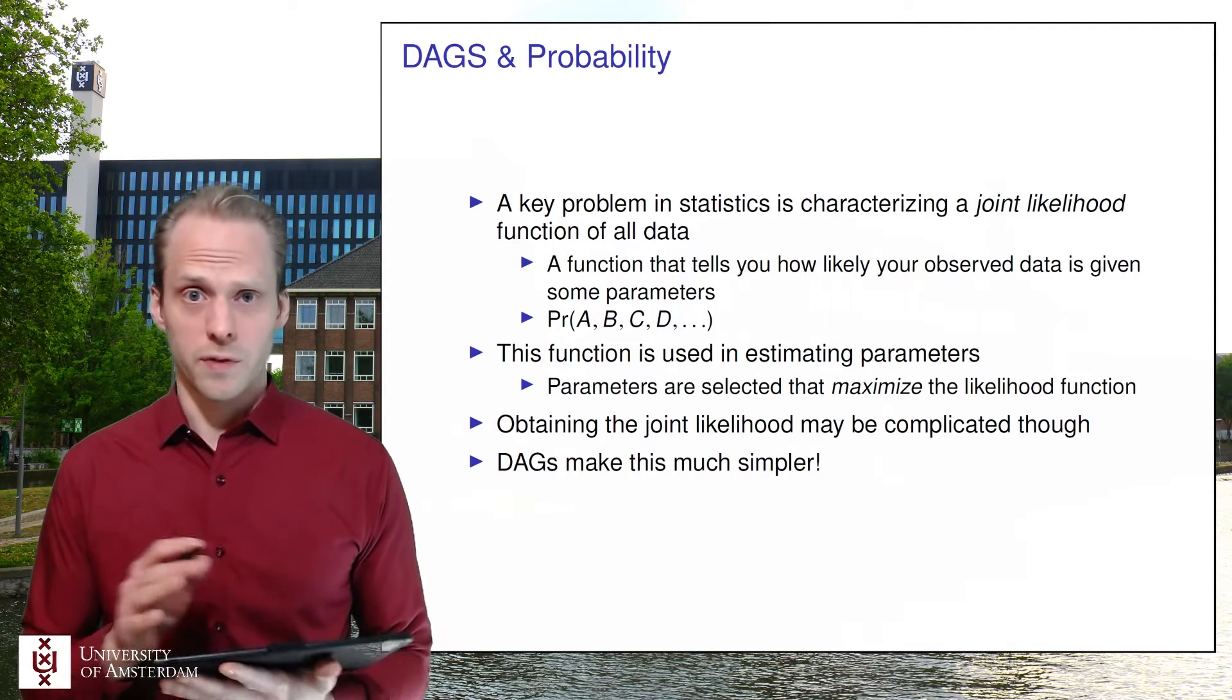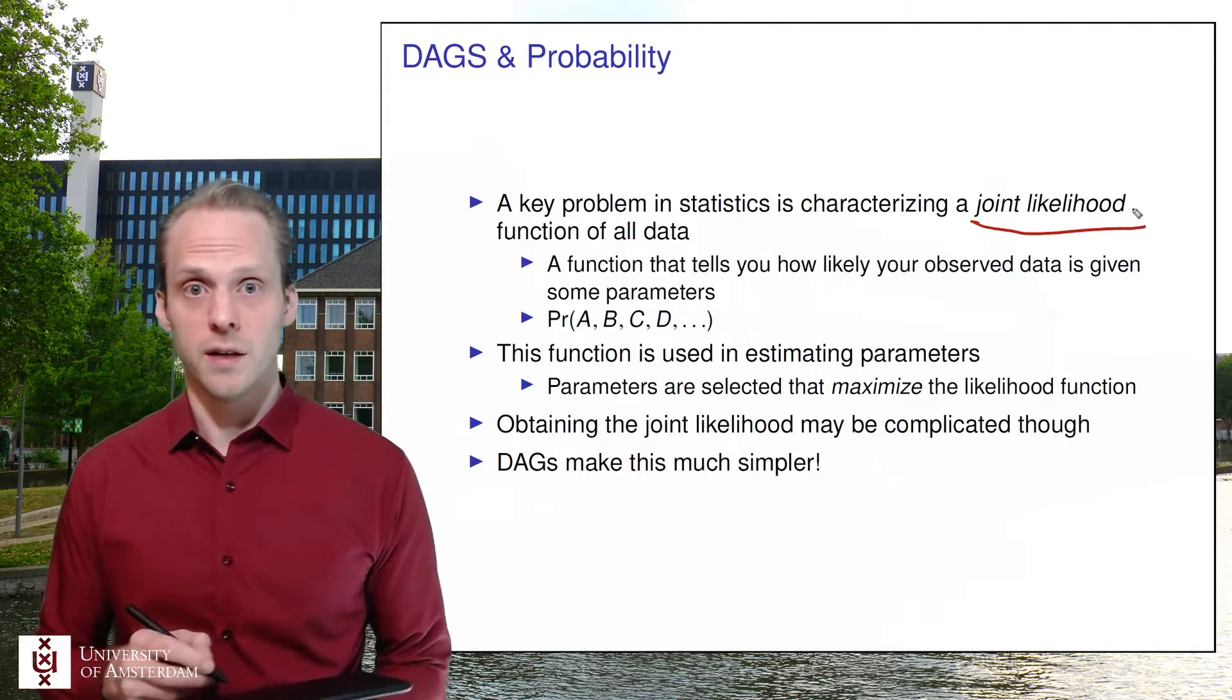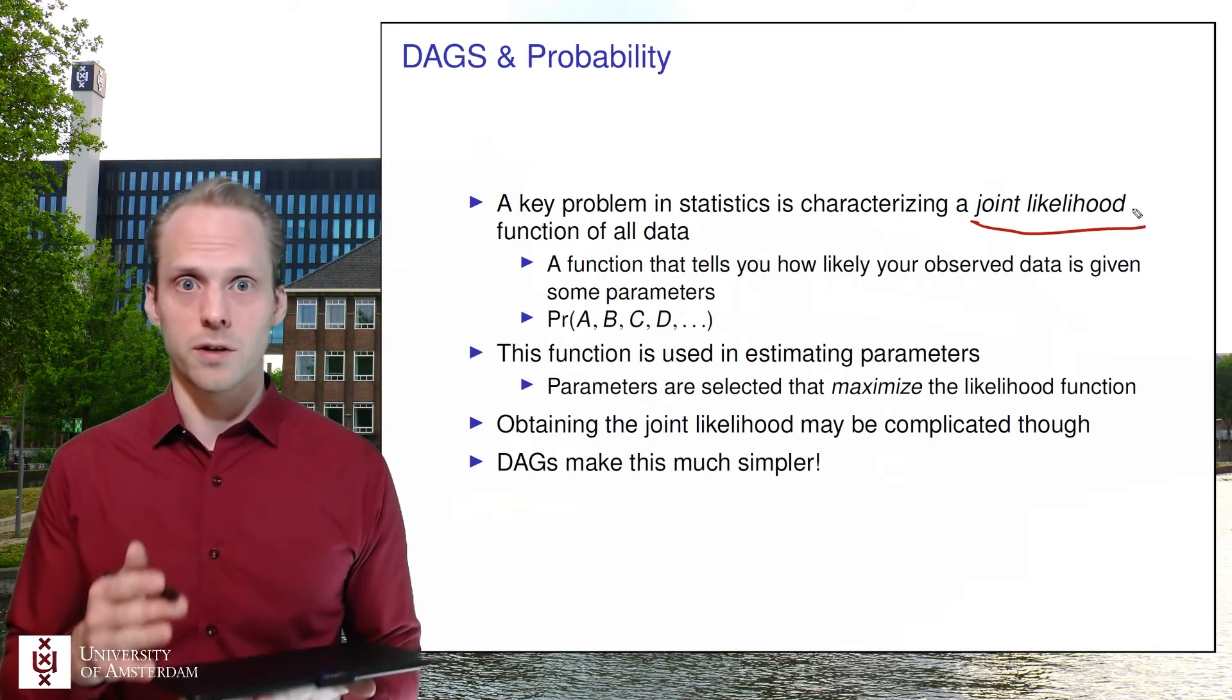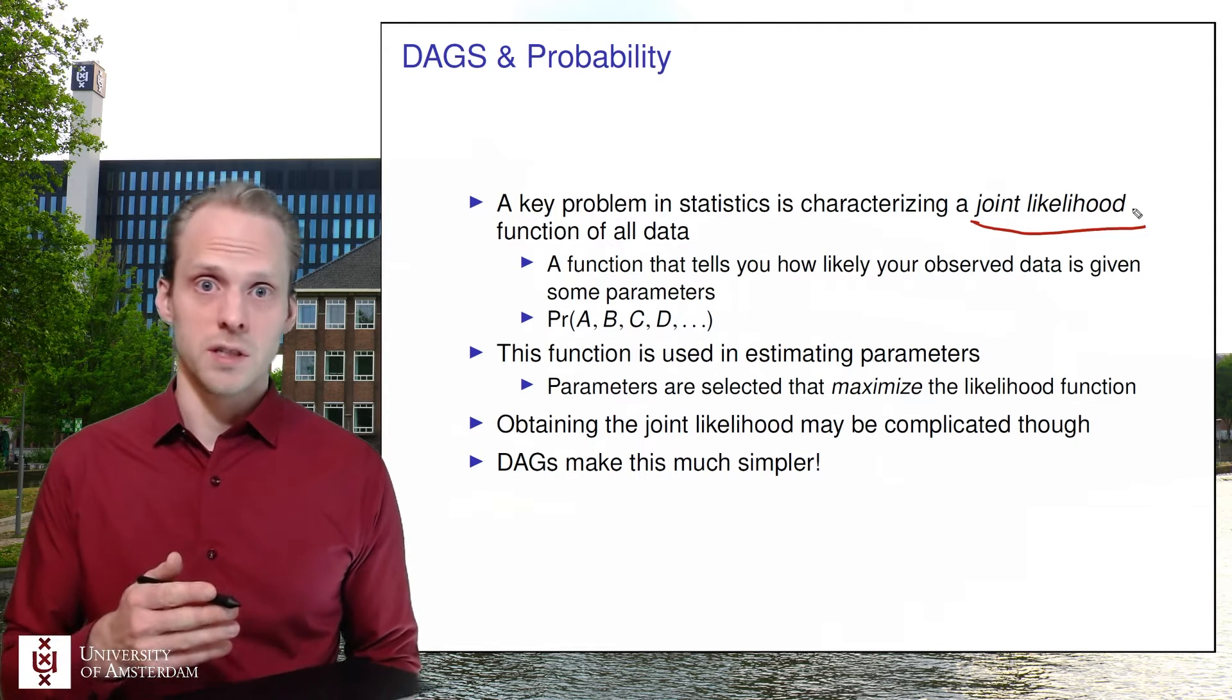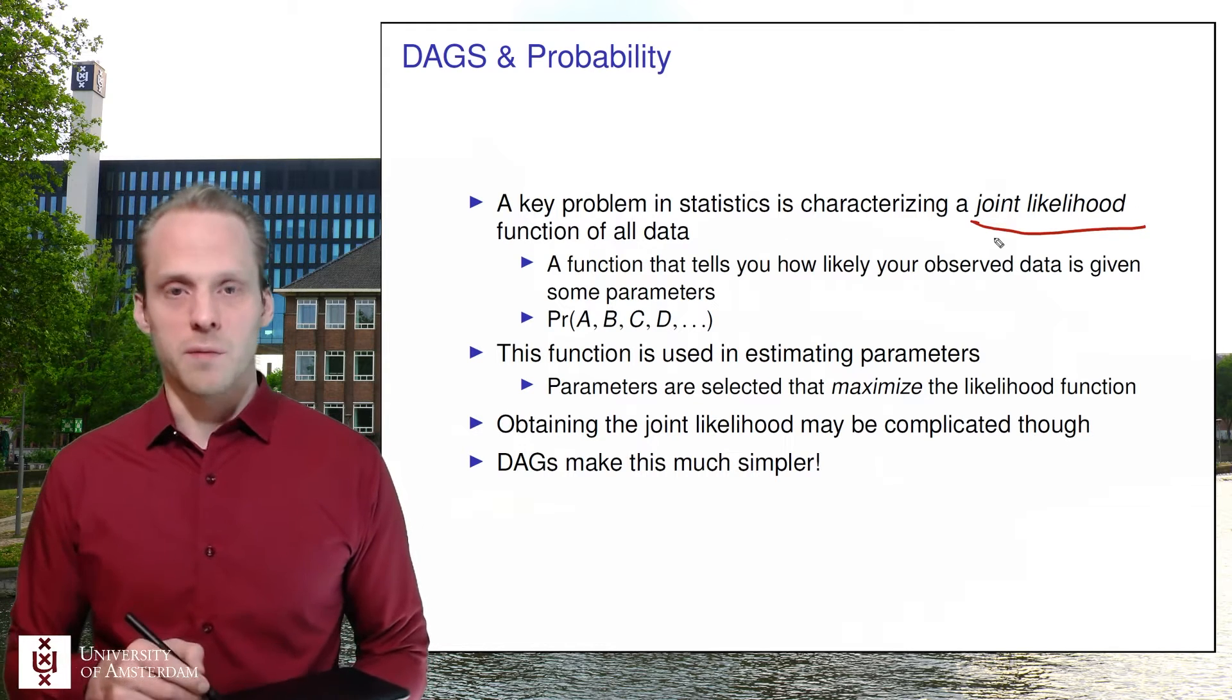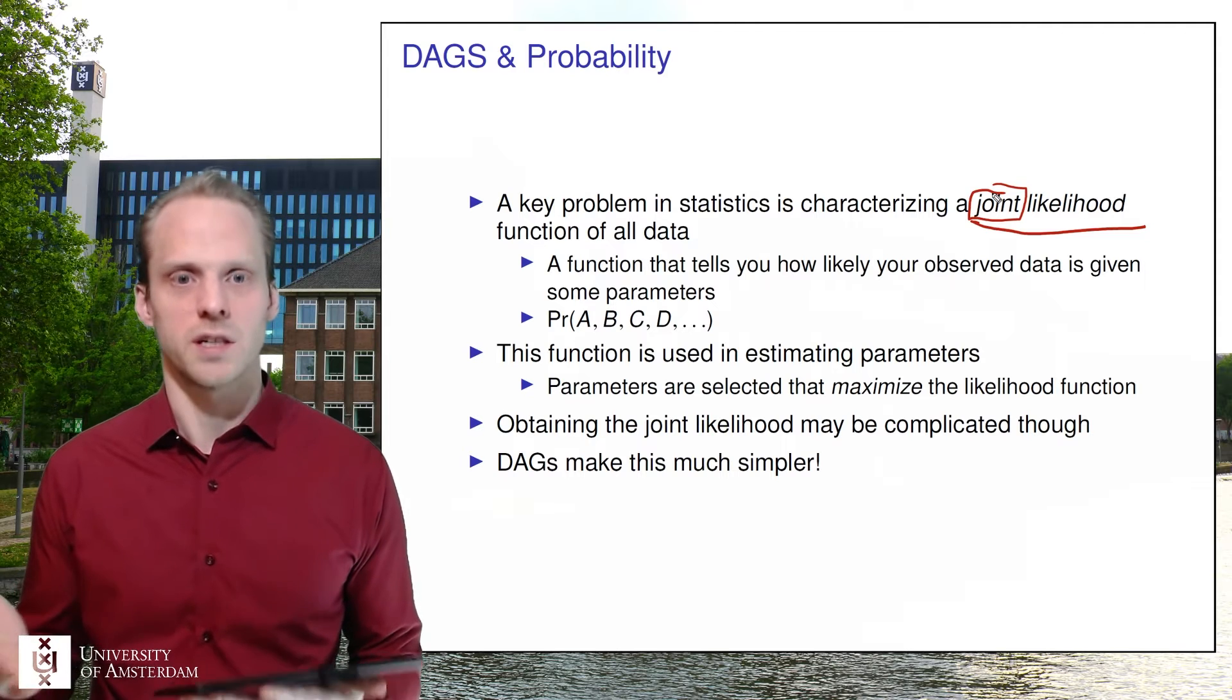In statistics, in multivariate statistics, a very common problem is that we need to have a joint likelihood function of all the data. So that is a function, a program if you will, that you put in data and then you get how likely was it that the data occurred under a certain parameter. And then we use that function to estimate our parameters so that we get parameters for example under which the data was most likely. And we need to have a mathematical expression for this joint likelihood and joint here refers to multiple variables, so multivariate statistics.